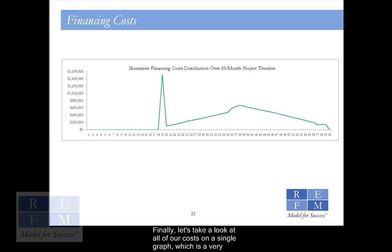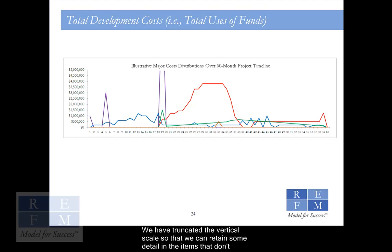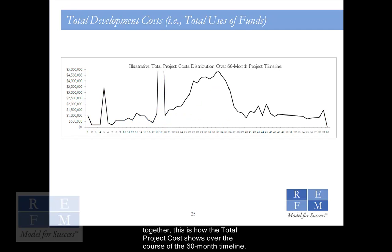Finally, let's take a look at all of our costs on a single graph, which is a very interesting and educational exercise. We've truncated the vertical scale so that we can retain some detail in the items that don't have as much in any one period. The purple line is our land, the blue are soft costs, the red are hard costs, the green are financing costs, and the orange are FF&E. Blending all of these costs together, this is how the total project cost shows over the course of the 60-month timeline.